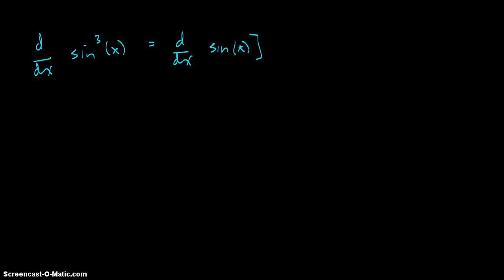means this: sine of x quantity cubed. It's just a little bit less clunky to put the 3 right there instead of using the brackets. So that's what we see here.